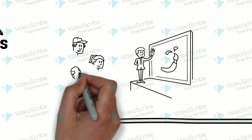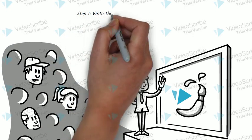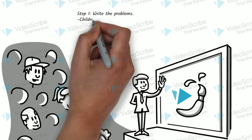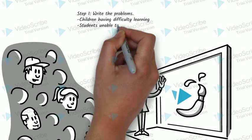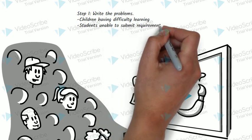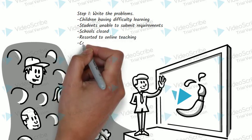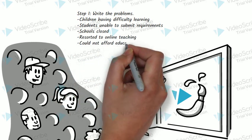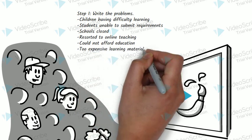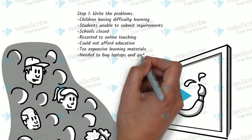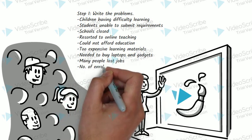From the example problem presented, we proceed to Step 1: Write down the problems. Children having difficulty learning. Students unable to submit requirements. Schools closed. Resorted to online teaching. Could not afford education. Too expensive learning materials. Needed to buy laptops and gadgets. Many people lost jobs. A number of enrollees dropped.